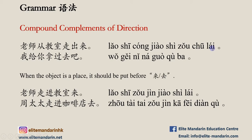Example sentence: 老师从教室走出来。 老师 means 'teacher,' 教室 means 'classroom.' The sentence means: 'The teacher comes out from the classroom.'